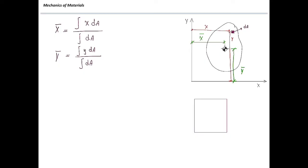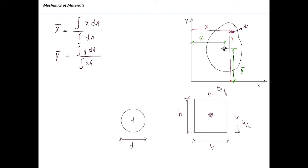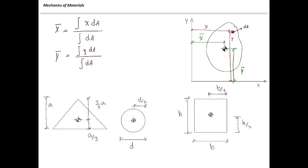For a rectangle with width b and height h, because the section is symmetric, the centroid is at the middle of the section — distance to the bottom is h over 2, and distance to the sides is b over 2. For a circle, the centroid is at the middle, so the distance to the sides is half the diameter, or the radius. For a triangle with total height a, the centroid is closer to the bottom — the distance to the bottom is a over 3, and the distance to the top is two-thirds of a.